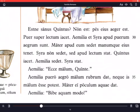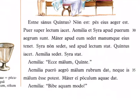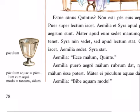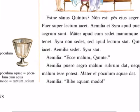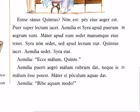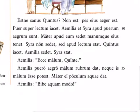Here we are back in chapter 11, Capitulum undecimum, and we are part of the way through section 1. We're ready to pick up at line 35. In the margin we see poculum aquae — poculum is 'cup,' aquae is 'of water.' Then it says poculum cum aqua, a cup with water — another way of saying that.